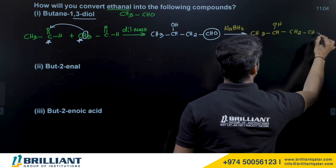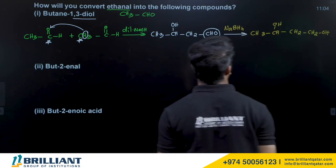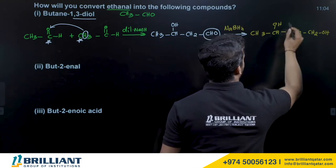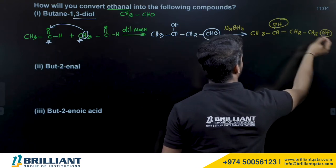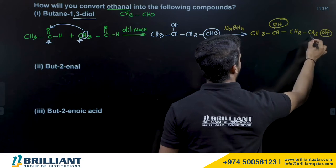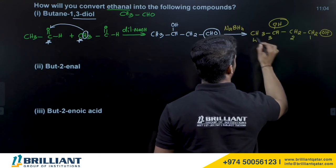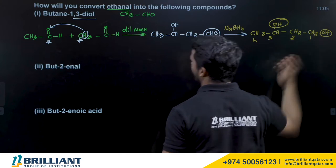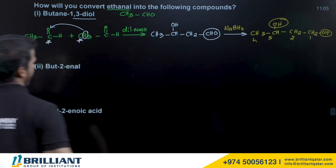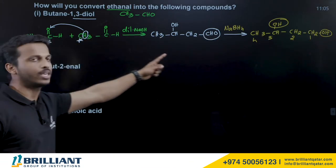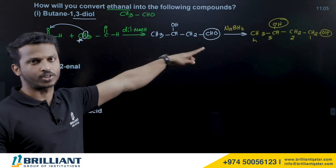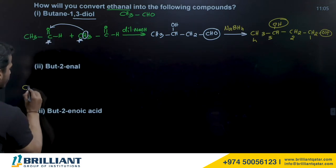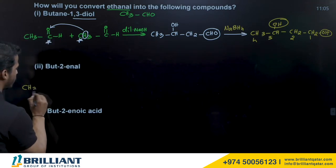The product after reduction is CH3CHOH–CH2–CH2OH, now fully converted to alcohol. Since both alcohol groups need the lowest locants, we number it 1,2,3,4 giving butane-1,3-diol. So the steps are: first aldol condensation, then reduction.